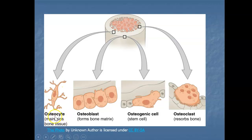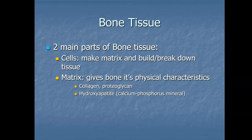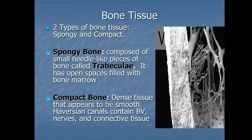So those are the four types of bone cells: the osteocyte maintains bone tissue; the osteoblast forms the bone matrix; the osteogenic cells are stem cells that eventually turn into osteoblasts; and the osteoclasts reabsorb or break down bone. There are two main parts of bone tissue: the cells, which we just talked about, and the matrix — those calcium salts that give bone its physical characteristics. The minerals most involved are calcium and phosphorus, forming hydroxyapatite.